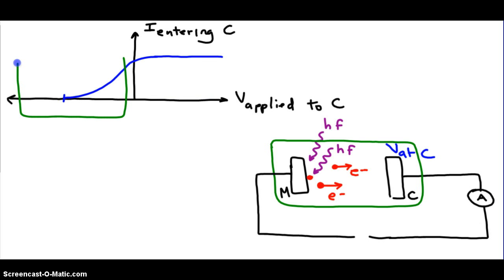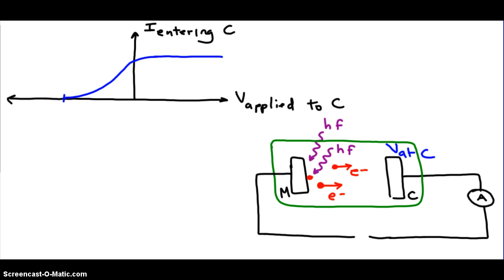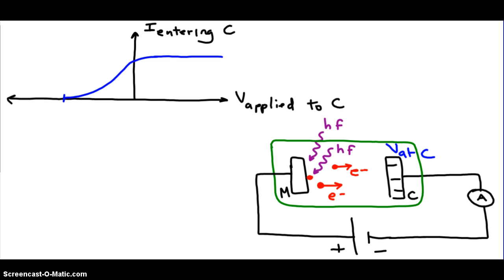Now let's examine the left half of this graph. When we look at the left half, we're dealing with negative x values, or negative voltages, applied to the collector plate. The way that we apply a negative voltage to the collector plate is by connecting it to the negative terminal of a battery. When we connect the collector to the negative terminal, a slight net negative charge accumulates on the collector plate. Electrons are negative and the collector plate is now negative, so electrons are repelled away from the collector plate.